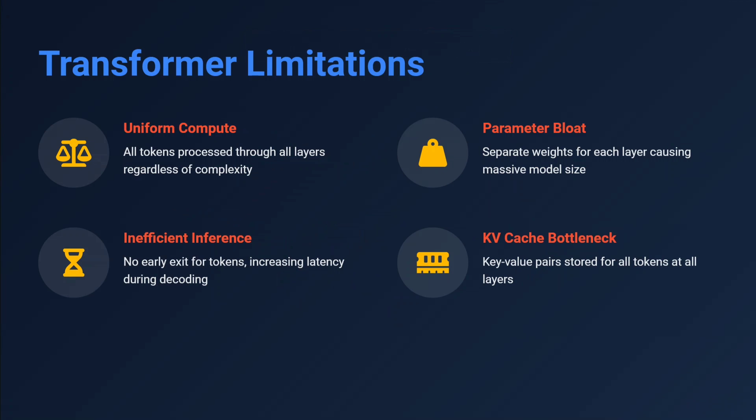Before we jump into Mixture of Recursions, we need to understand the limitations of transformer architecture. The first and foremost is uniform compute. If you have a simple token to predict compared to a complex token — for example, predicting 'the' versus predicting 'Buckingham' — the compute should not be uniform. But in transformers, the time taken to compute 'the' is the same as for 'Buckingham'. This should not be happening.